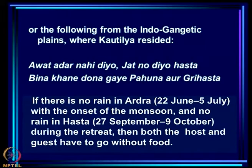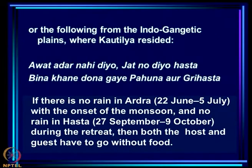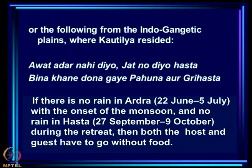Another proverb from the Indo-Gangetic plains states that if there is no rain during one of the nakshatras at onset and no rain during Hastha while the monsoon retreats — roughly late September to 9th October — then both the host and the guest will have to go without food, meaning the crops will fail. These people had considerable knowledge of the impact of rainfall variation on crops, and in particular which were the sensitive periods in which rain is critical.